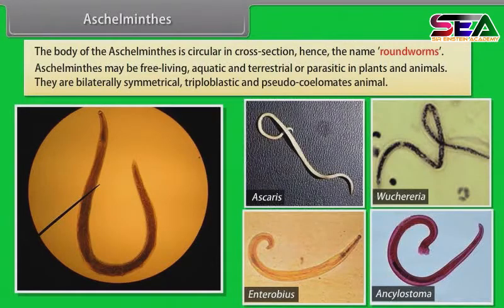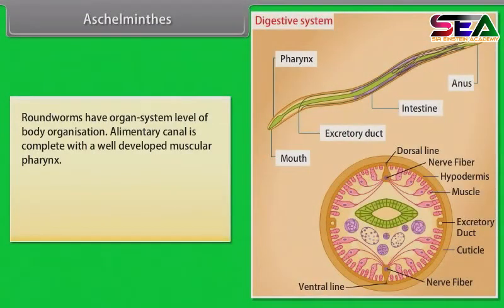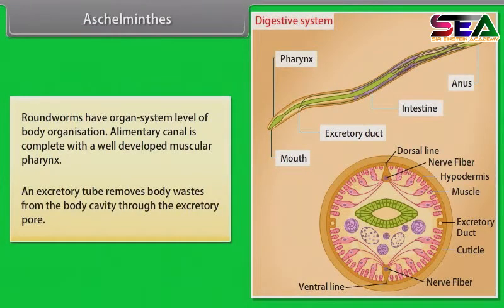Aschelminthes are bilaterally symmetrical, triploblastic and pseudocoelomate animals. Roundworms have organ system level of body organization. The alimentary canal is complete with a well-developed muscular pharynx.